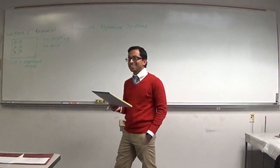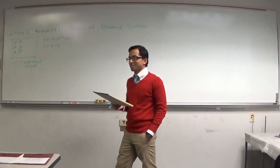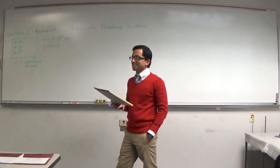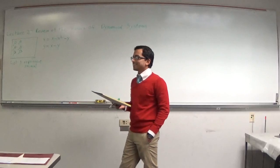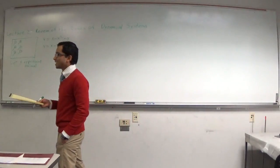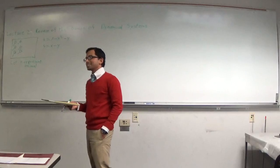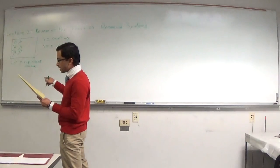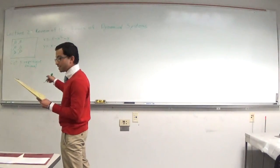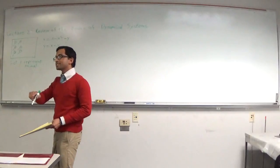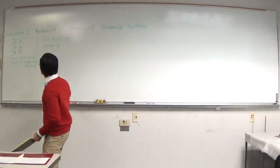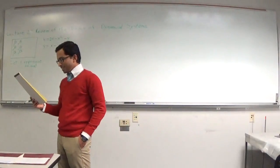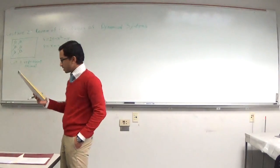So the modified model is: x-dot equals 2x minus x-squared minus y, and y-dot equals x minus y. The fertilizer effect doubles only the birth rate term for the plants, so x appears as 2x rather than x in the plant equation. That's our model.